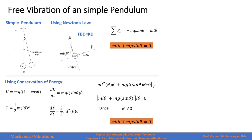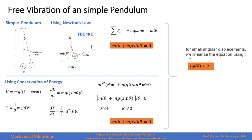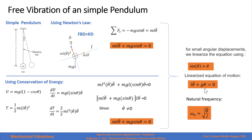As you see, we obtain the same nonlinear equation, so we must linearize it. For very small angular displacements, sine of theta is approximately equal to theta. Substituting sine theta by theta gives a linearized equation of motion, and the natural frequency of a pendulum is the square root of g over L. Note that it is independent of the mass.